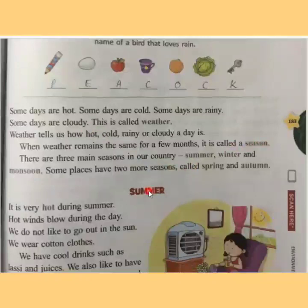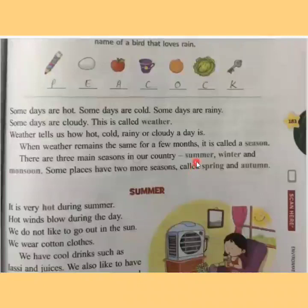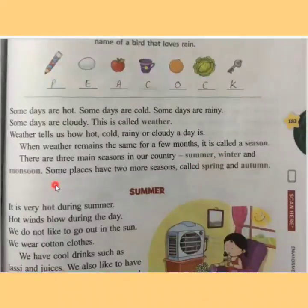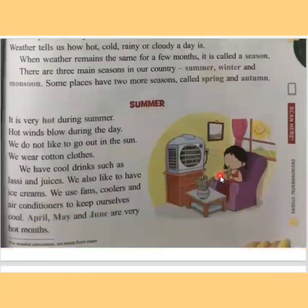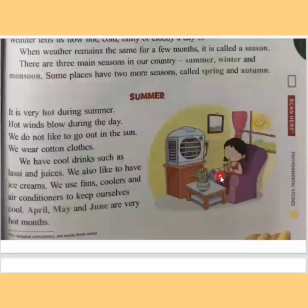Now there are three main seasons in our country, in India, and they are summer, winter, and monsoon. Some places also have two more seasons and they are spring and autumn. So today we will be studying about summer, winter, and monsoon.